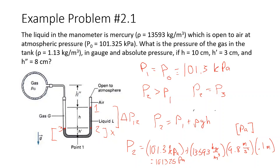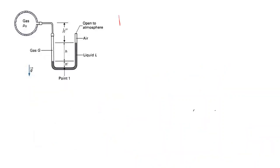So if we do 101,325 plus 13,593 times 9.8 times 0.1, that gives us a final pressure P2 equals 114,646 pascals, which is equal to 114.6 kPa.